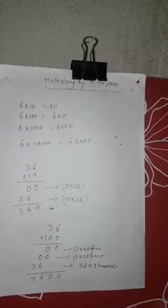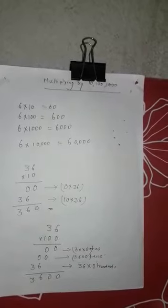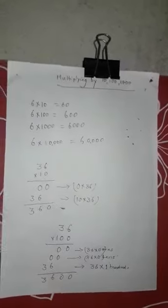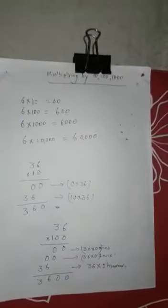So similarly, if we have to multiply by 10,000, put 4 zeros on the right of the given number. So this is very simple.